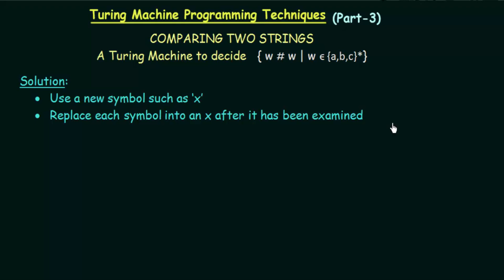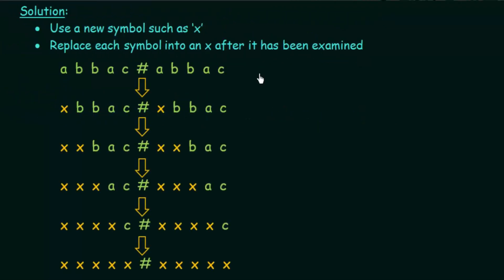Let's take an example to see how this works. We have a string of the form containing a, b, and c: specifically a, b, b, a, c, hash symbol, and then a, b, b, a, c. We can see that the first half of the string is equal to the second half. The first symbol we see is an a, so we replace this a with an x and move the tape head until we encounter the hash symbol, which is the midpoint.